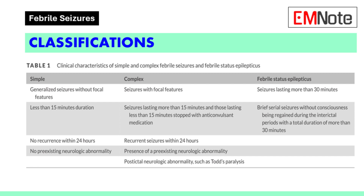Simple febrile seizures are generalized without focal features, last less than 15 minutes, and do not recur within 24 hours in individuals with no pre-existing neurologic abnormality. Complex febrile seizures have focal features, last more than 15 minutes, or less than 15 minutes but were stopped with anticonvulsant medication, recur within 24 hours, or occur in children with a pre-existing or postictal neurologic abnormality.